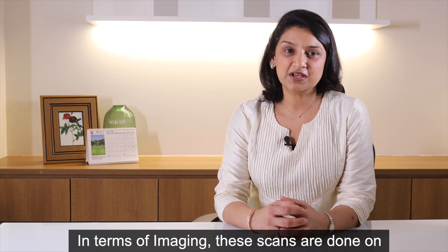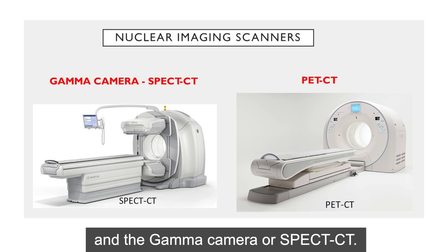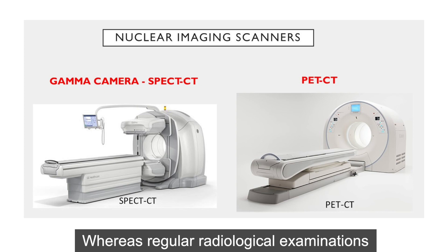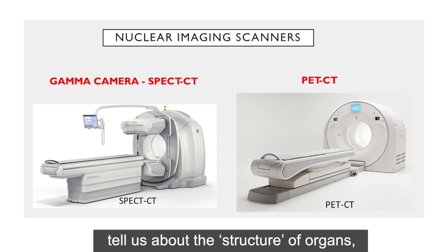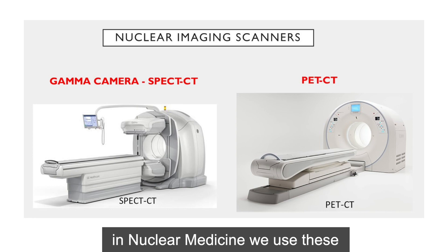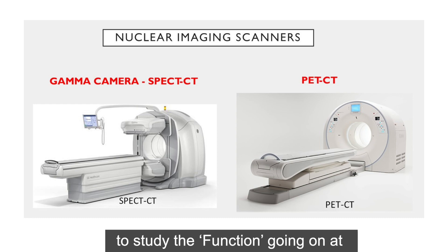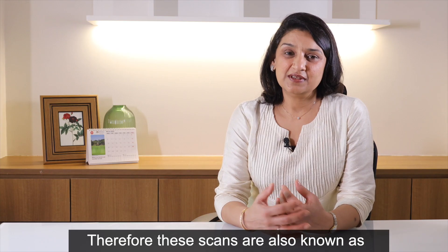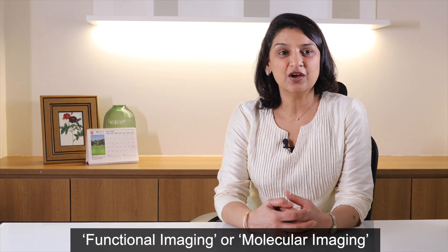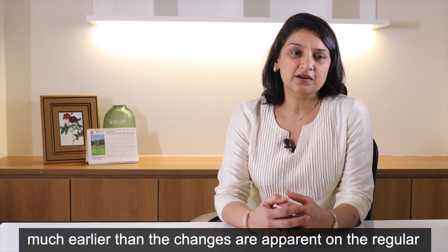In terms of imaging, these scans are done on two types of scanners: PET CT scanner and the gamma camera or the SPECT CT. Whereas regular radiological examinations like X-rays and CT scans tell us about the structure of organs, in nuclear medicine we use tagged molecules known as radiopharmaceuticals to study the function at various organ and structural levels. Therefore these scans are also known as functional imaging or molecular imaging, and the advantage is that it gives us information much earlier than the changes are apparent on regular radiological scans.